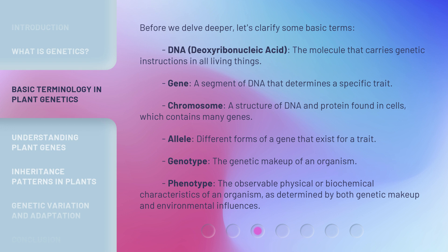An allele refers to the different forms of a gene that exist for a trait. Genotype is the genetic makeup of an organism. Phenotype refers to the observable physical or biochemical characteristics of an organism, as determined by both genetic makeup and environmental influences.